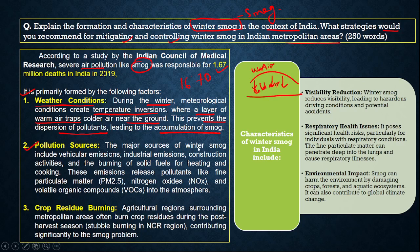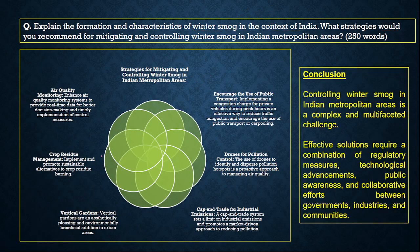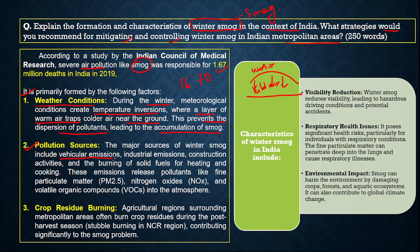Second, pollution sources: the major sources of winter smog include vehicular emissions, which release pollutants like PM2.5 and PM10 — micro-sized particles. Industrial emissions and construction activities also contribute significantly, releasing nanoparticles and dust particles that form smoke.